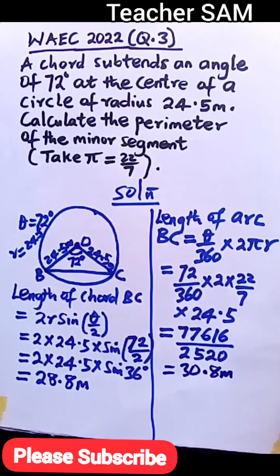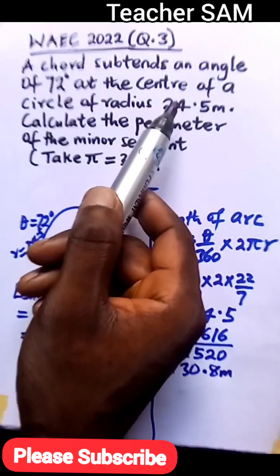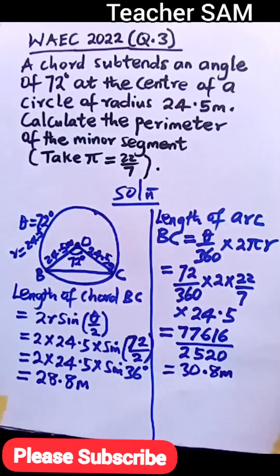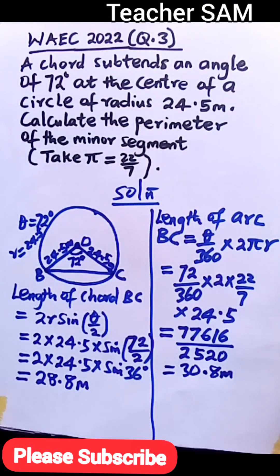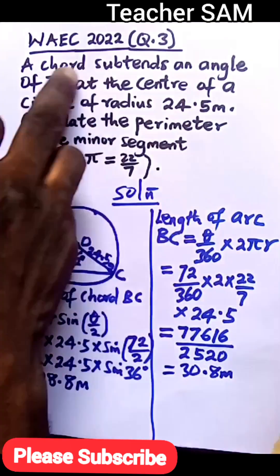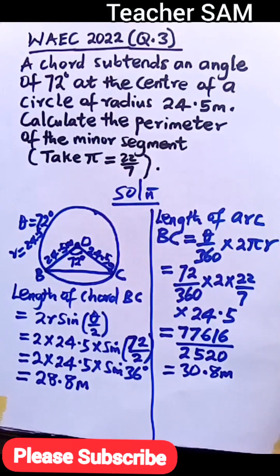Why are we leaving the answer in 1 decimal place? If you go back to the equation, you will find that the radius was given in 1 decimal place. As covered in approximation, whenever measurements are given in a certain decimal place, if not otherwise stated, you follow that same decimal place in your answer. That is why we are using 1 decimal place here.